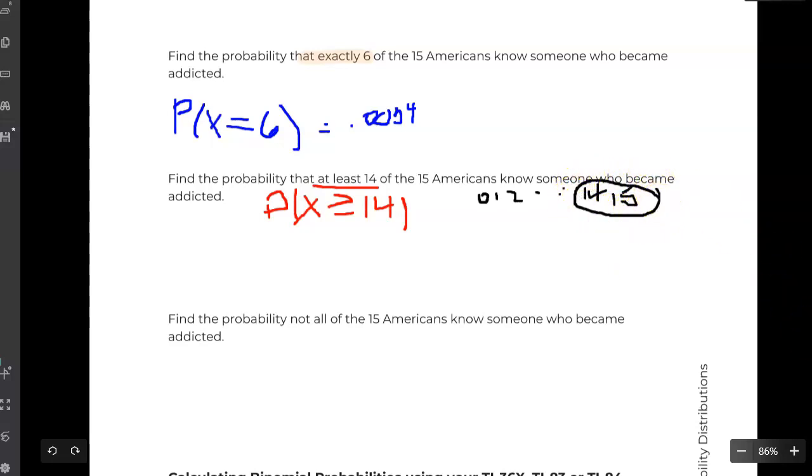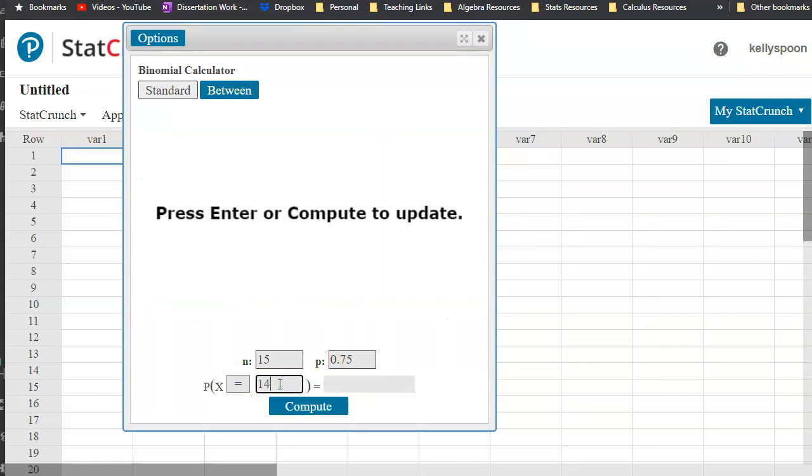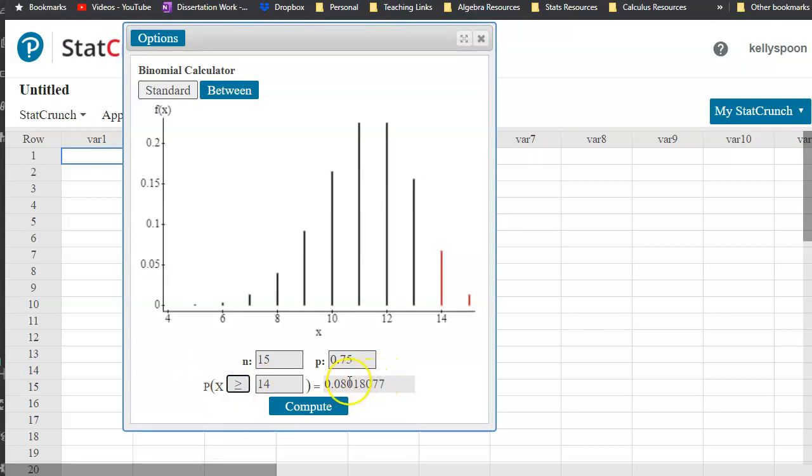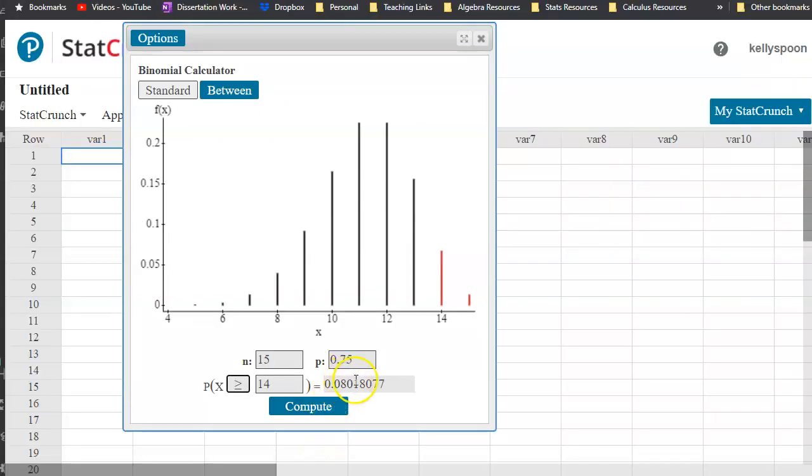The nice thing is you get the same visual when you do the StatCrunch piece of this. When I come to StatCrunch and say now it's 14 and I want greater than or equal to 14, I can see 14 and 15 turned red, so that matches up with the ones that I circled, 14 and 15. I'm able to just grab the value straight off StatCrunch: 0.0802.